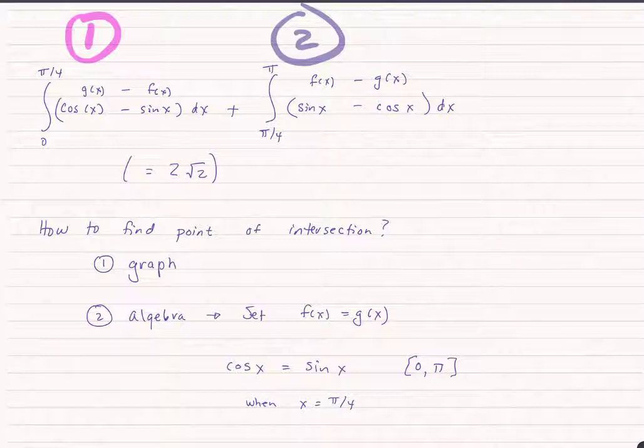And we know this only happens in quadrant one, because in quadrant one, everything's positive. Zero to pi goes between quadrants one and two. In quadrant two, sine is positive, but cosine is negative. So the only place algebraically we can find that point of intersection would be is pi over four, which we knew from looking at the graph.